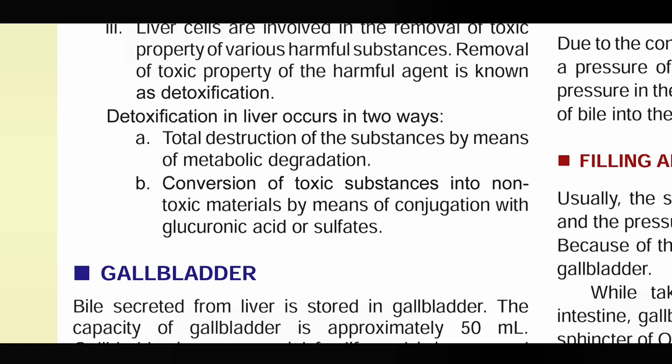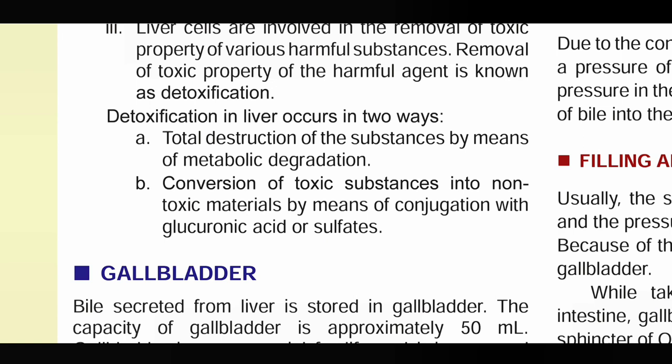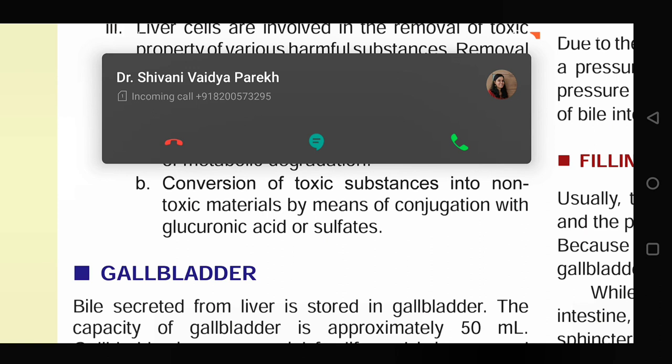Detoxification in the liver occurs in two ways. First, total destruction of the substance by means of metabolic degradation. Second, conversion of toxic substances into non-toxic material by means of conjugation with glucuronic acid or sulfatase.